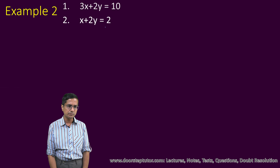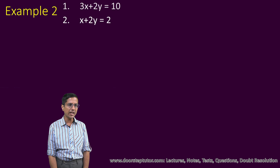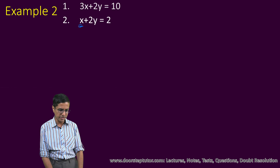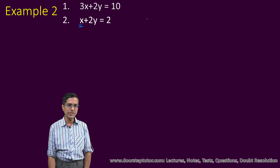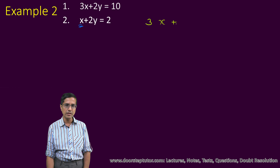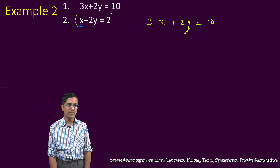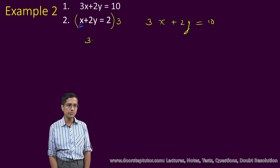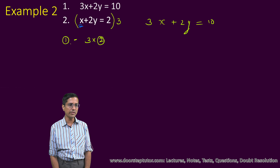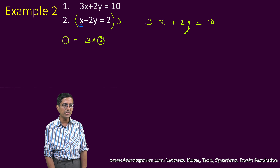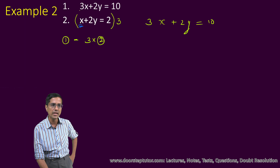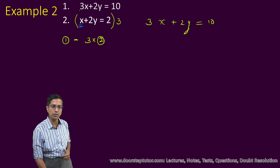So again here we have two equations in two variables. What we will do is try to eliminate x and solve for y. The first equation is 3x plus 2y is equal to 10. In the second equation there is only one x, but we need to produce three x's and then subtract from the first equation. So we are multiplying the second equation by 3 and subtracting it from the first equation — this will produce 3x, and then 3x minus 3x gives zero, so x will be eliminated.